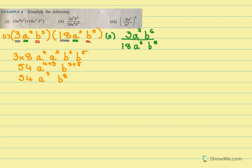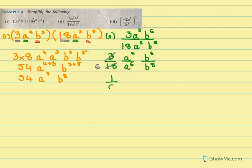Now: 3A raised to 7, B raised to 6 over 18, A raised to 6, B raised to 8. We put the like terms together — it is 3 over 18, then A raised to 7 over A raised to 6, then B raised to 6 over B raised to 8. For 3 over 18, I will cancel to get 1 over 6. Now A raised to 7 divided by A raised to 6 — we subtract the powers. For B raised to 6 divided by B raised to 8, we also subtract the powers. So we have 1 over 6, A to the power 7 minus 6 equals 1, and B to the power 6 minus 8 equals minus 2.